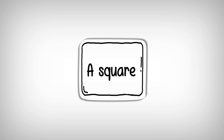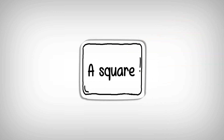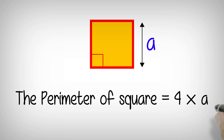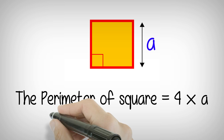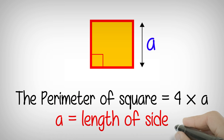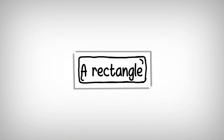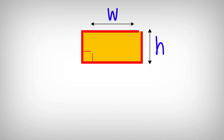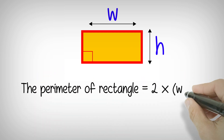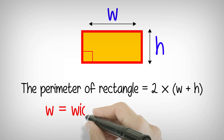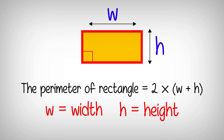A square: to calculate the perimeter, it's 4 times a, because all the sides are equal in length — a is the length of a side. To calculate a rectangle, you need to know the width and the height. The formula is 2 times the quantity width plus height.